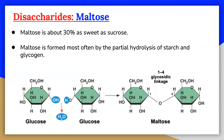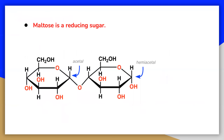Therefore, an ingested disaccharide must first be broken down by hydrolysis reaction into its two constituent monosaccharide units. In the body, such hydrolysis reactions are catalyzed by enzymes, and in the case of maltose, it is the maltase enzyme.